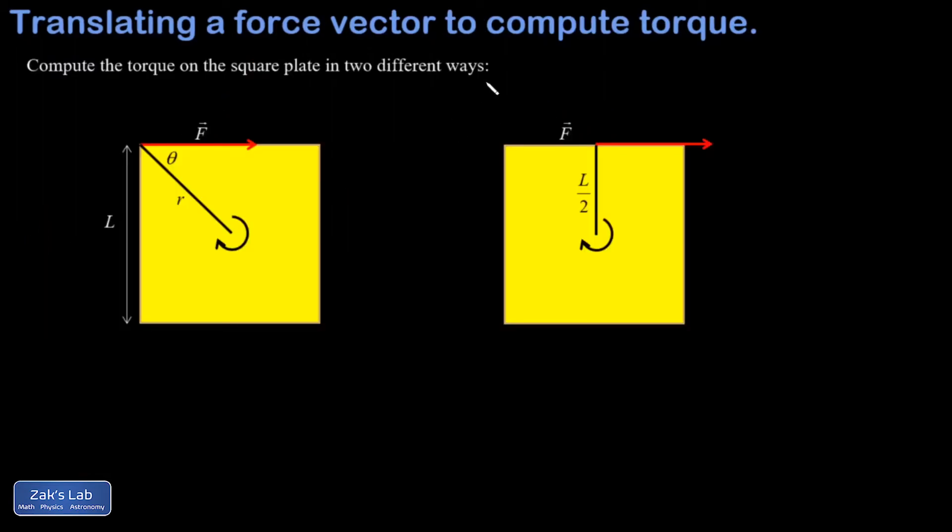Let's look at an example. In this example, we're asked to compute the torque on the square plate in two different ways, and it's implied here that the rotation axis is the center of the square.